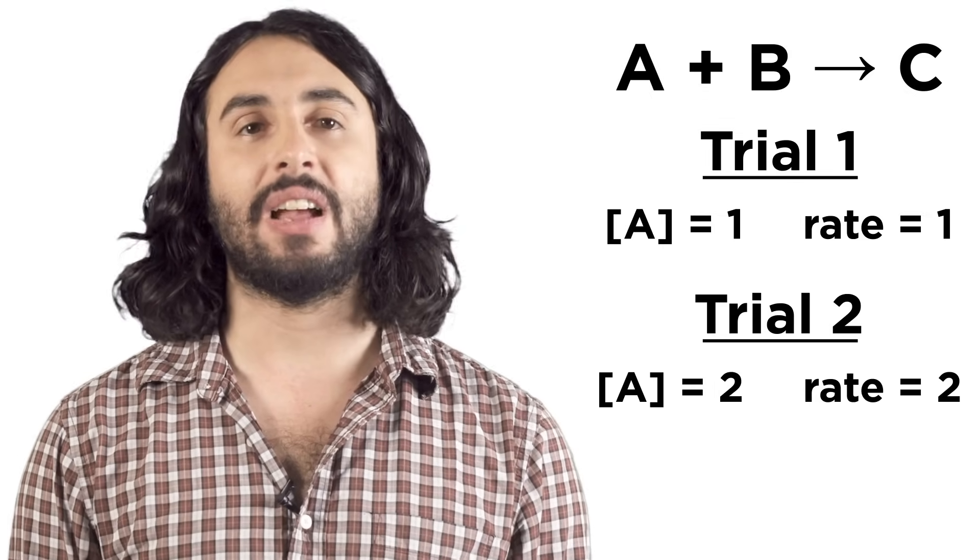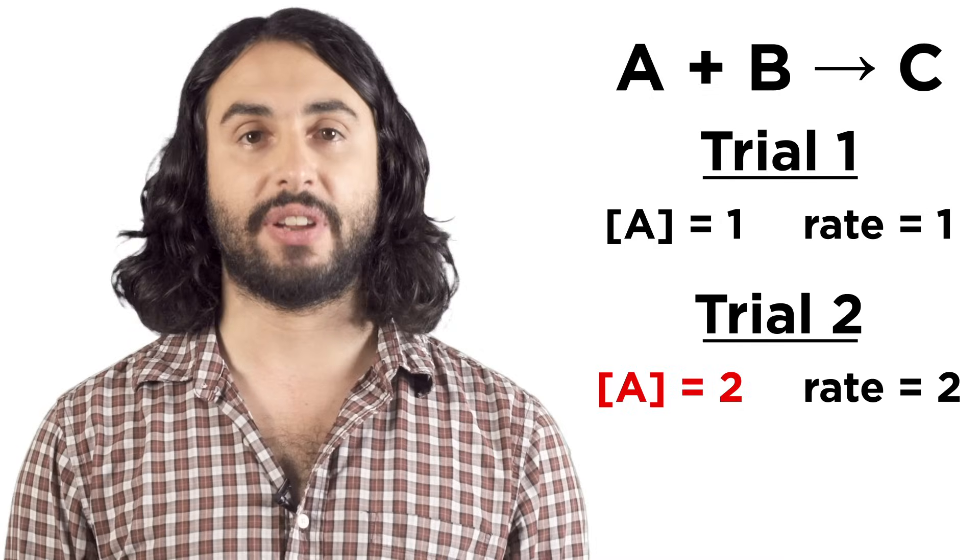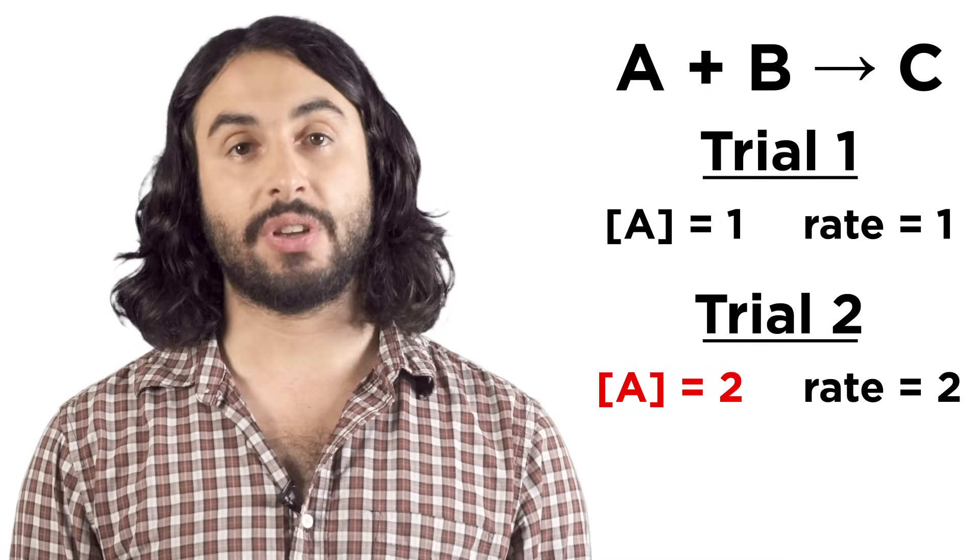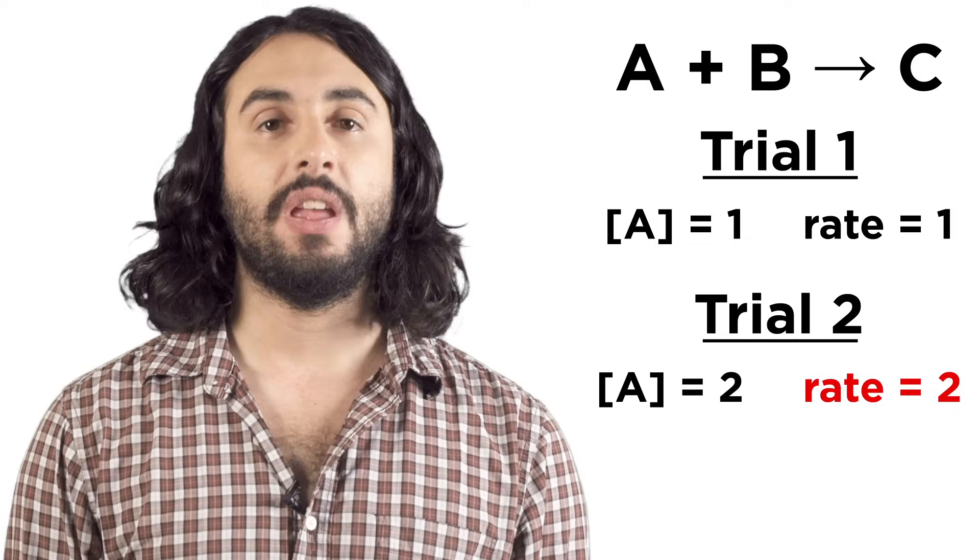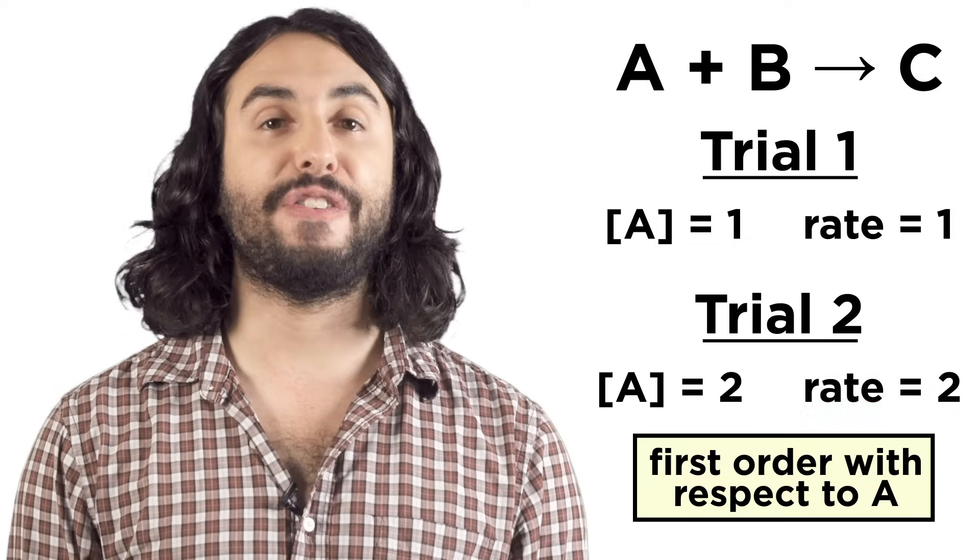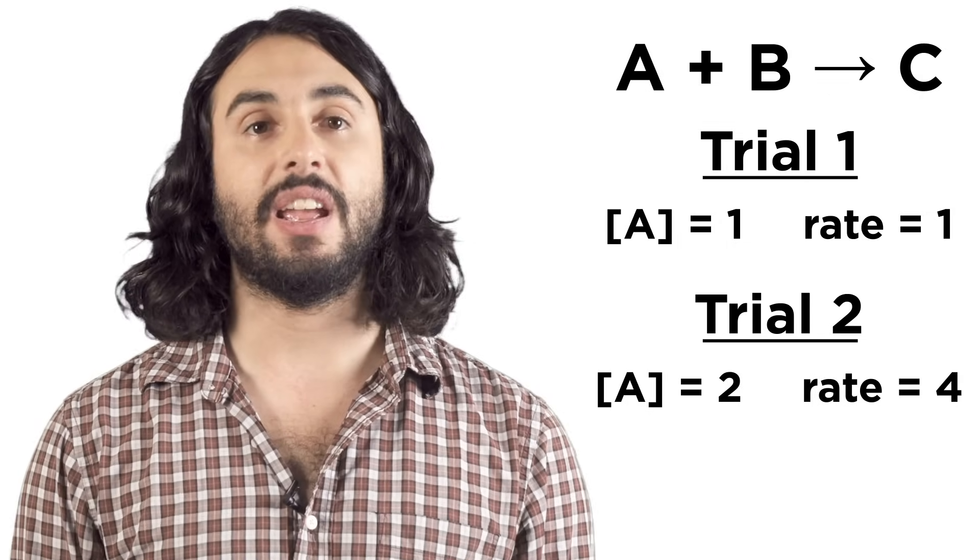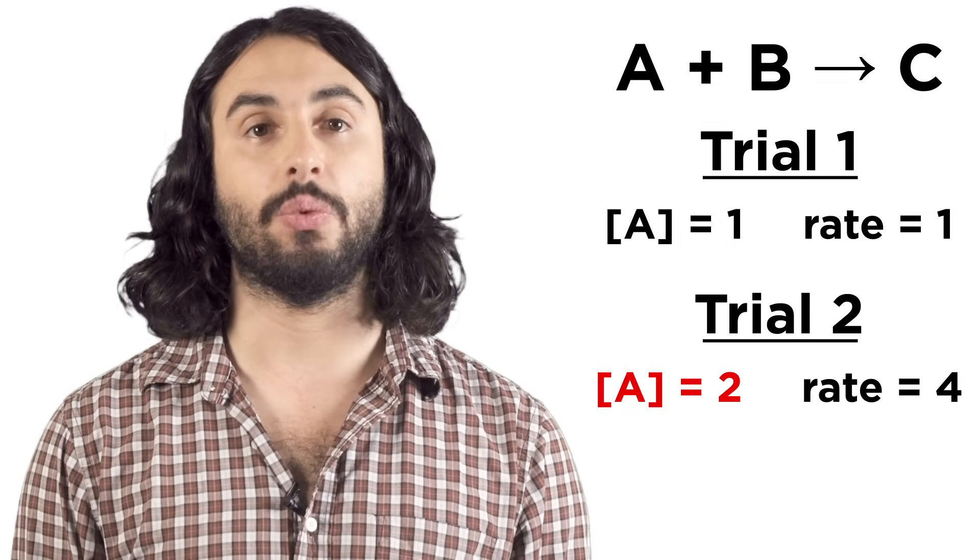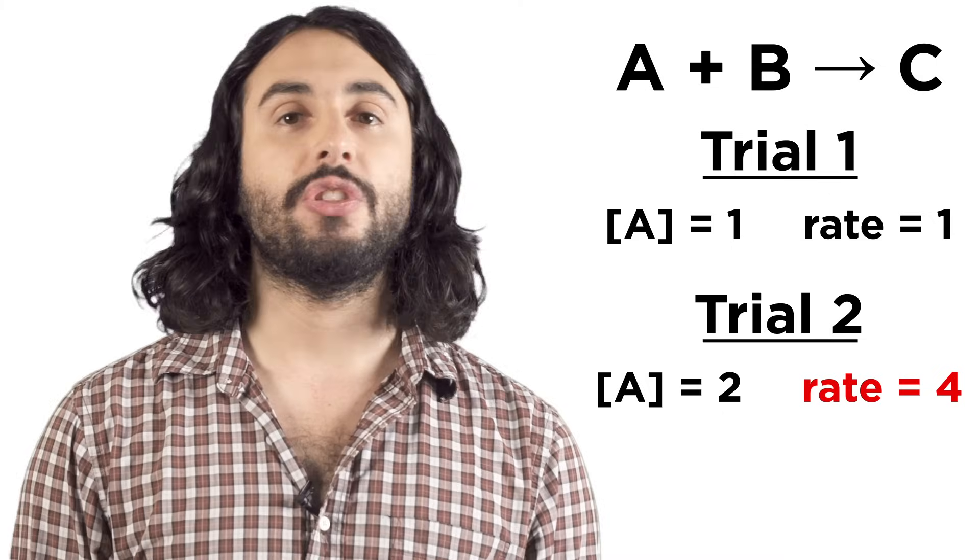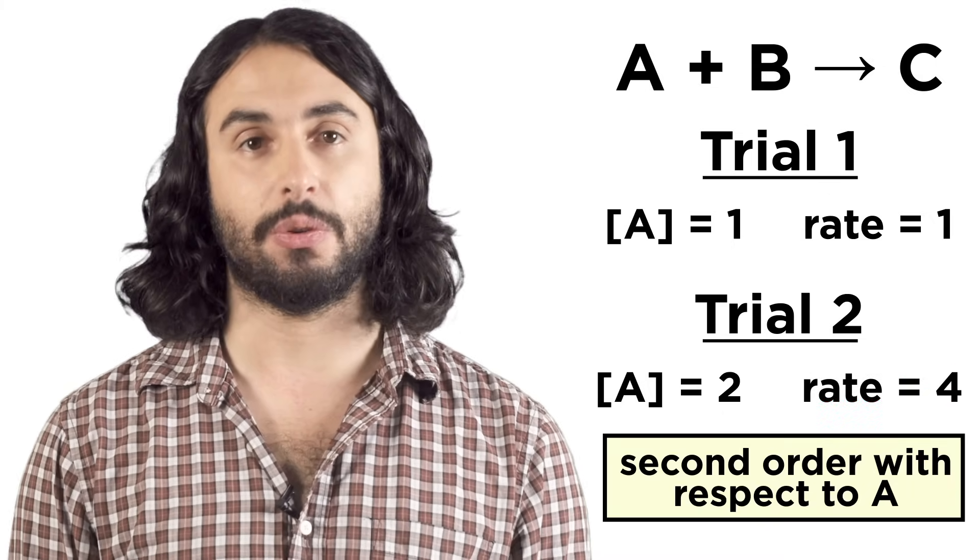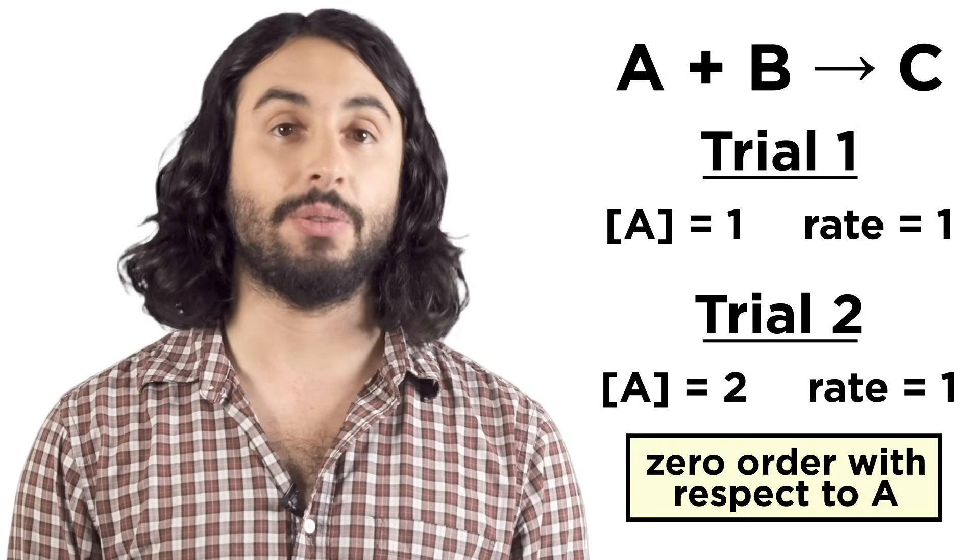If we keep everything else the same but we double the concentration of one reactant and as a result the rate doubles, then the reaction is first order with respect to that reactant. Instead, if we double the concentration and the rate quadruples, the reaction is second order with respect to the reactant. And if a change doesn't affect the rate, it's zero order.